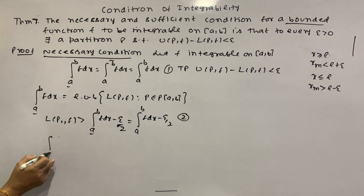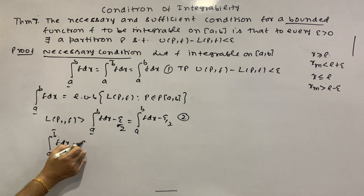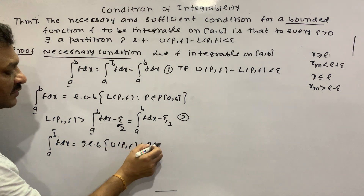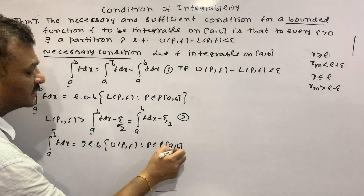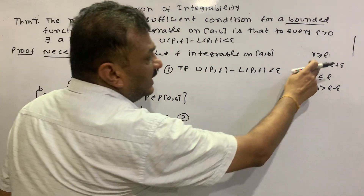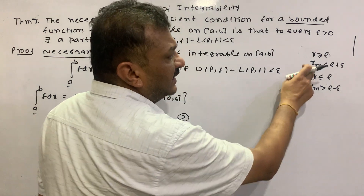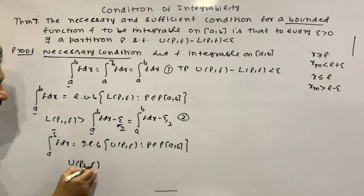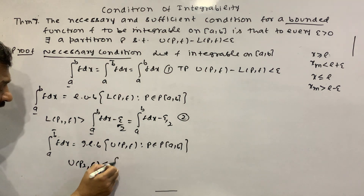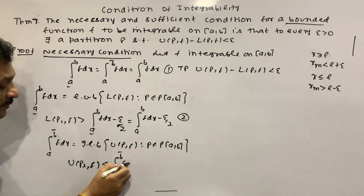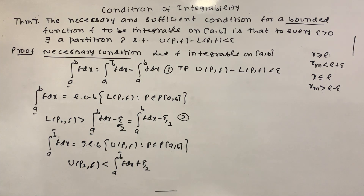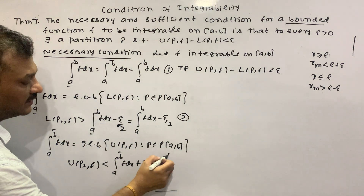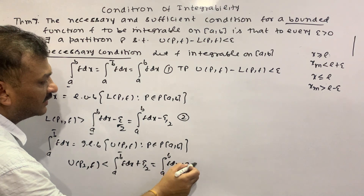Now for the upper Riemann integral: by definition, it equals the greatest lower bound of UPf such that P belongs to the family of partitions. By the definition of greatest lower bound, at least one partition P2 satisfies: UP2f is less than the upper Riemann integral plus epsilon by 2, which equals the integral from a to b of f(x) dx plus epsilon by 2.